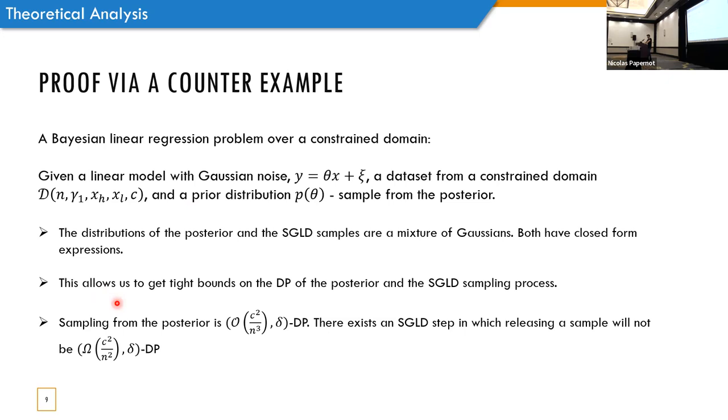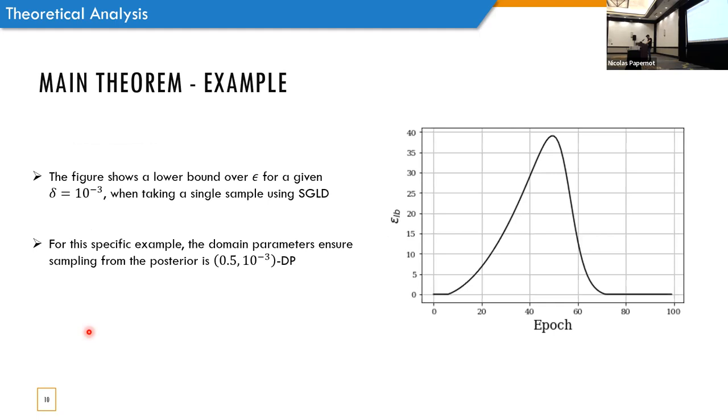So, what we showed is that sampling from the posterior is O of C square over N to the third, differentially private, while for the same problem, there exists an SGLD step in which releasing a sample will not be C square over N square, differentially private. So, as C and N are parameters of our domain, we can change them as we want to show the behavior described by our theorem.